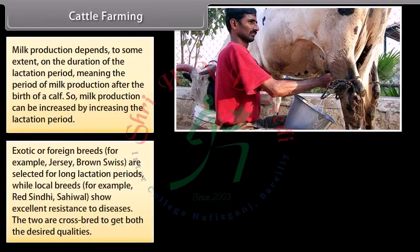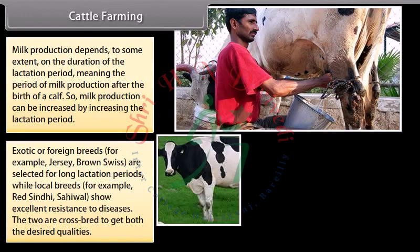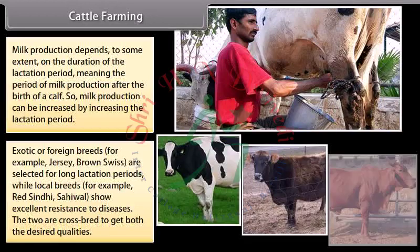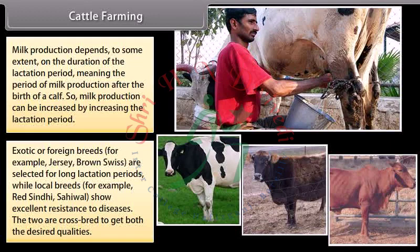Exotic or foreign breeds, for example Jersey and Brown Swiss, are selected for long lactation periods, while local breeds, for example Red Sindhi and Sahiwal, show excellent resistance to diseases. The two are cross-bred to get both the desired qualities.